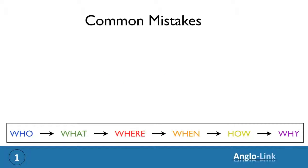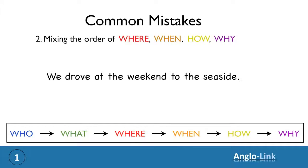The second common mistake is mixing the order of where, when, how and why. Let's look at some examples. We drove at the weekend to the seaside. If we bring the colours in, you will see immediately what's gone wrong. The where and the when are in the wrong place. The correct order is, we drove to the seaside at the weekend.